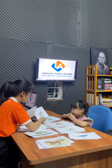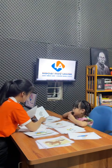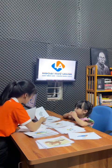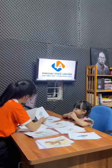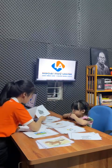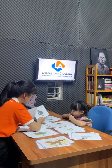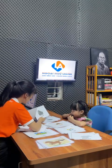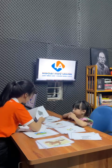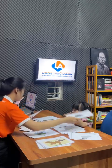What animal is this? Elephant. Can the elephant fly? No. Can the elephant swim? No. What animal is this? Gorilla. Gorilla can — can the gorilla fly? No.